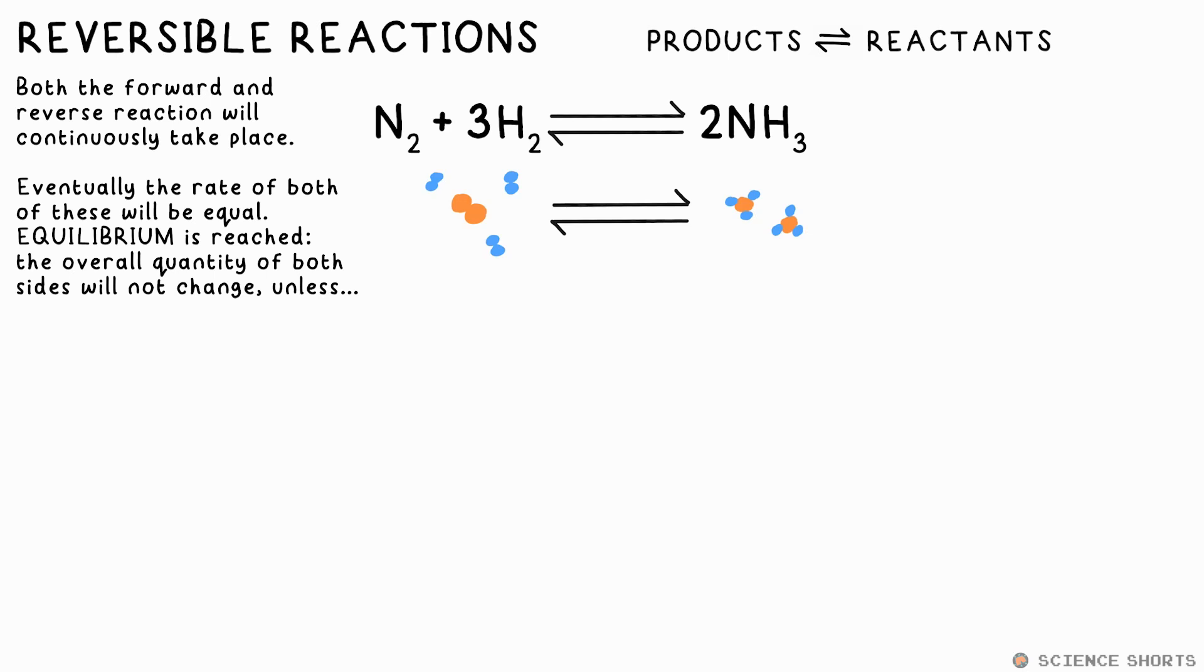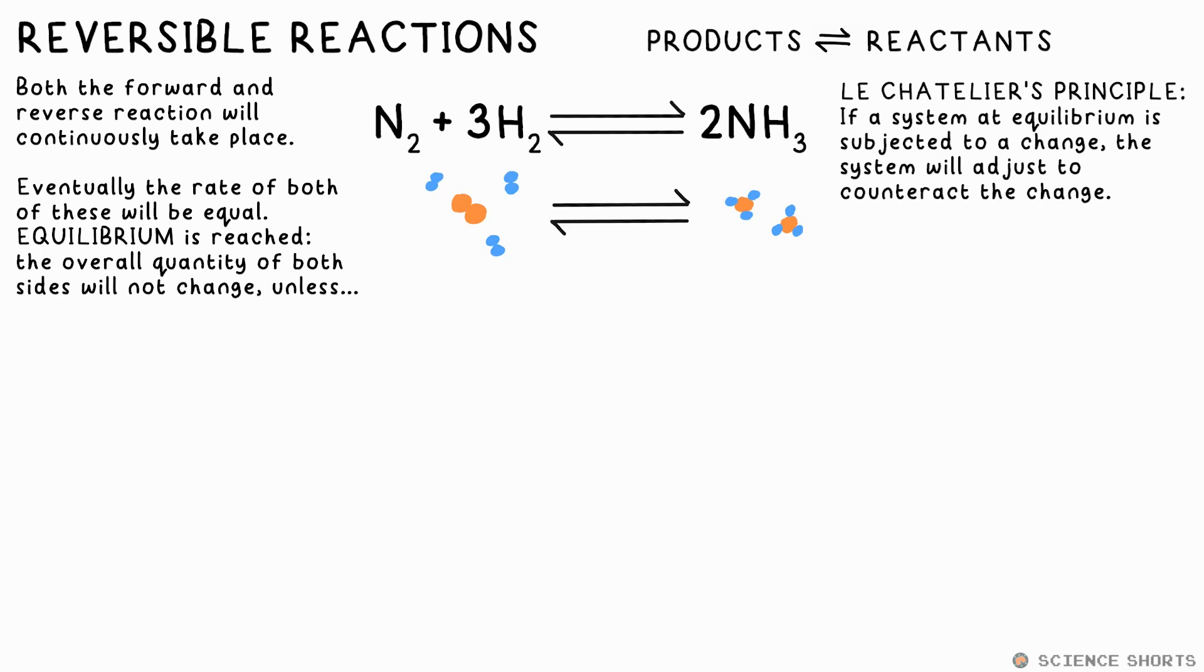So we're technically not saying that the reaction has stopped per se, it's just that there's no more overall change, that is, until a condition is changed which will affect these rates. Le Chatelier's principle states, if a system at equilibrium is subjected to a change, the system will adjust to counteract that change. Sounds awfully vague, so let's see what that actually means in practice.